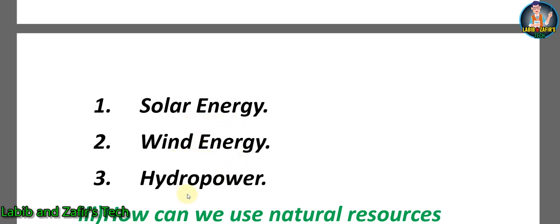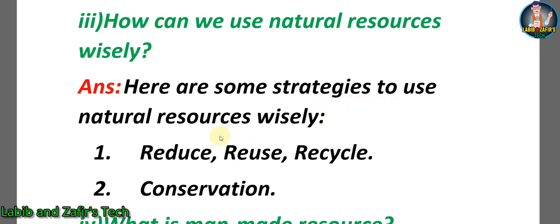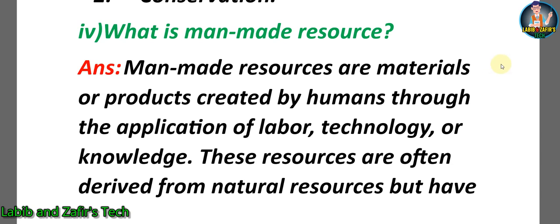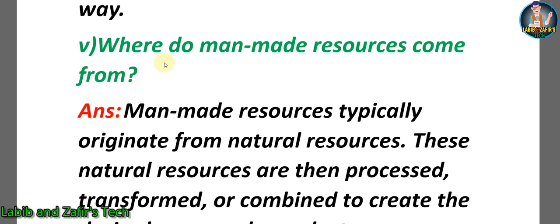Third question: How can we use natural resources wisely? Answer: Some strategies include — 1) Reduce, reuse, recycling, 2) Conservation. Fourth question: What is a man-made resource? Answer: Man-made resources are materials or products created by humans through the application of labor, technology, or knowledge. These resources are often derived from natural resources but have been transformed or processed in some way.